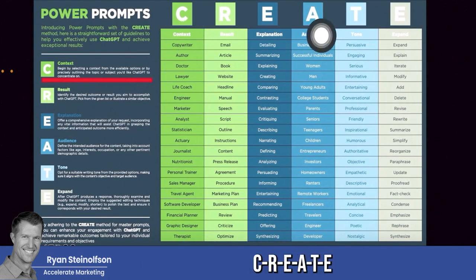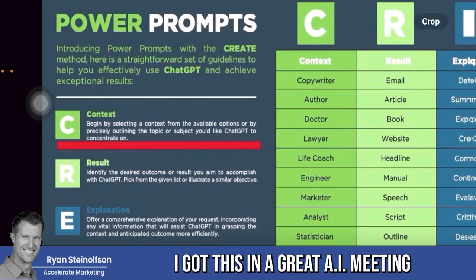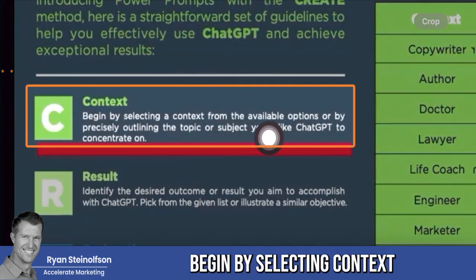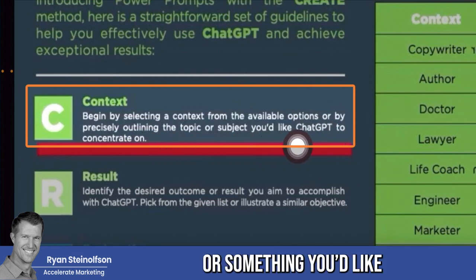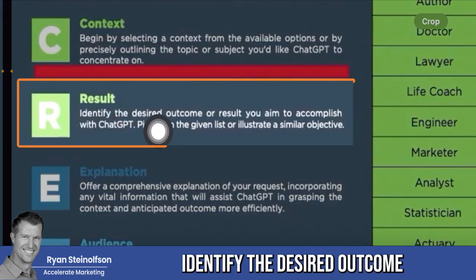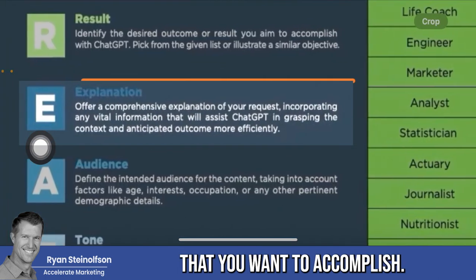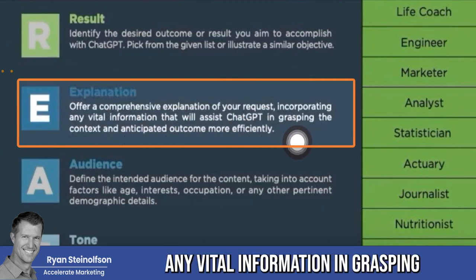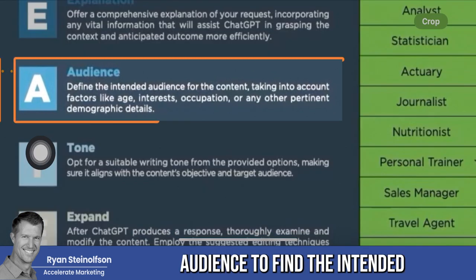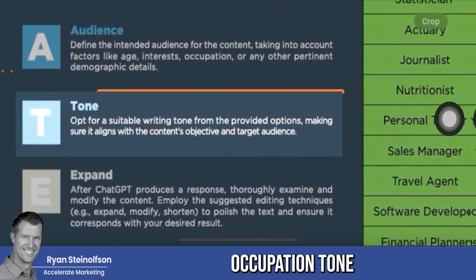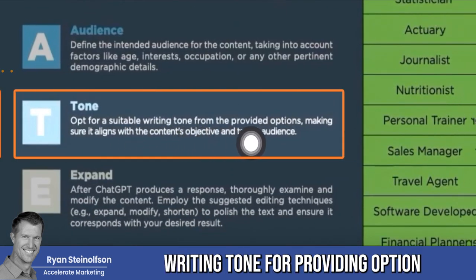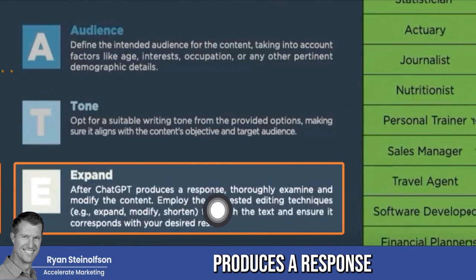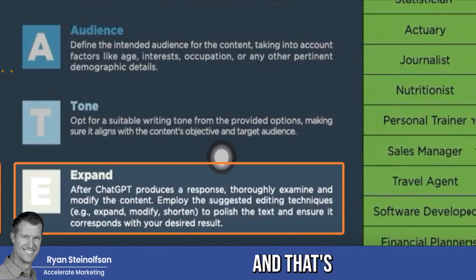You can see the C-R-E-A-T-E acronym. I got this from a great AI meeting I attended. The first element is Context — precisely outline the topic or subject you'd like ChatGPT to concentrate on. Second is Result — identify the desired outcome you want to accomplish. Third is Explanation — offer a comprehensive explanation of your request, incorporating any vital information. Fourth is Audience — define the intended audience. Fifth is Tone — opt for a suitable writing tone that aligns with the content's objective. Sixth is Expand — after ChatGPT produces a response, keep expanding, which is why we have the testing suite.